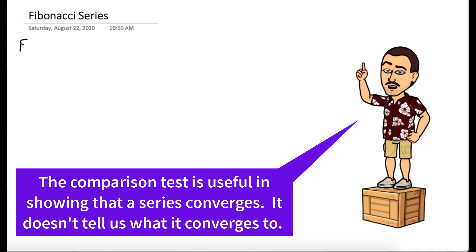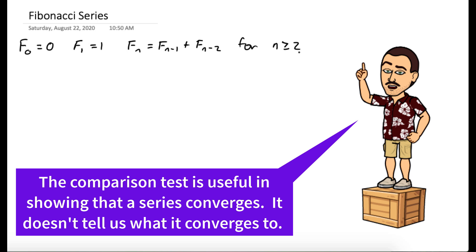We first want to show that our series converges, and we're going to do this with a comparison test. The Fibonacci sequence has f₀ equals 0, f₁ equals 1, and the nth Fibonacci number is equal to the sum of the previous two for n greater than or equal to 2. We're going to compare our series — the sum of fₙ over 10 to the n — to the series of 2 to the n over 10 to the n.